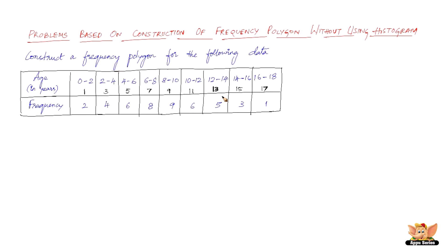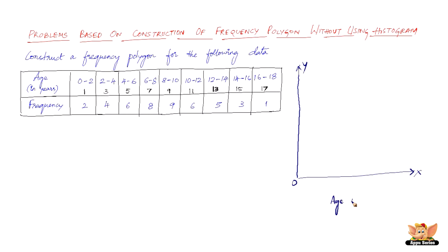Now we need to plot the points (xi, fi). The x values are 1, 3, 5, 7, 9, 11, 13, 15, 17 and these are the y values. Before we can plot, we need to draw mutually perpendicular straight lines — this being the x-axis, this being the y-axis, and this being O. On the x-axis we have age in years, and on the y-axis we have the frequency.